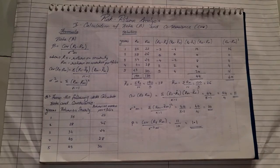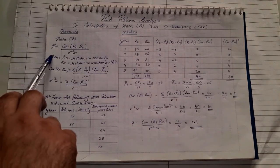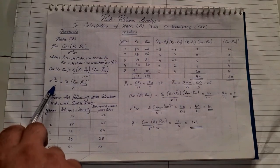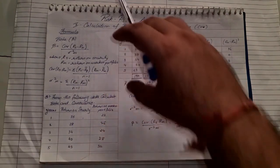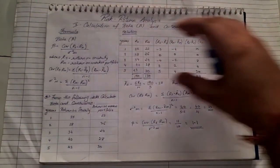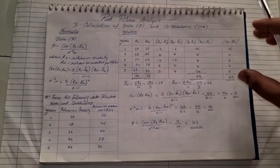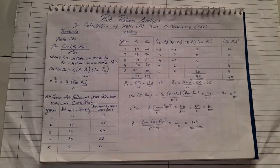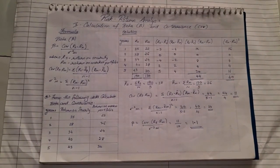This is how you solve sums under the chapter Risk and Return Analysis — a very important topic for all TYBMS students. The formulas for beta, covariance, and standard deviation squared M are given; you just have to set up the proper table, apply the values, and get your final answer. I hope everyone has understood this.